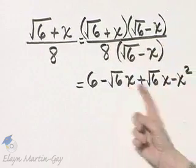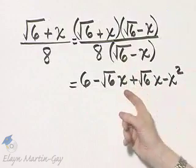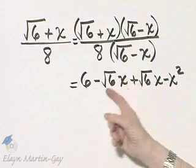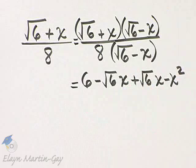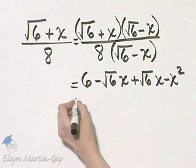By the way, this x and this x, they are not under the radical. So you can write it as x square root of 6 or square root of 6 times x. Remember multiplication is still commutative and associative.